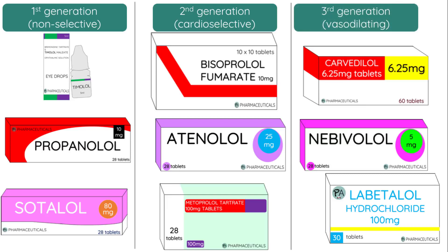However, they are put into a separate category because they have additional vasodilating effects. Remember, beta-blockade shouldn't really cause vasodilatation because, in fact, blocking beta-2 receptors causes vasoconstriction. However, these drugs work via different mechanisms. For example, carvedilol causes vasodilatation by inhibiting alpha-1 receptors, which normally cause vasoconstriction. Nebivolol works in a completely different way, increasing the endothelial production of nitric oxide in order to cause vasodilatation. Some have suggested these drugs may be better for treating hypertension. So that's a very quick run-through of the three main subclasses of beta-blockers.